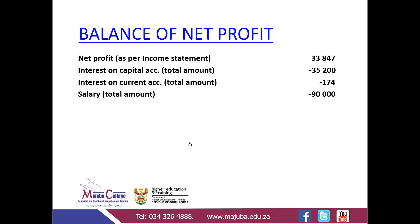The next item on the appropriation statement is the salary of 90,000 relating to Kite, which is also deducted from the net profit because Kite is entitled to it. The purpose of this exercise was to determine the balance of net profit. In this case, we established a loss to be shared amongst the partners, because the deductions totaling more than 33,847 resulted in a loss of 91,527.